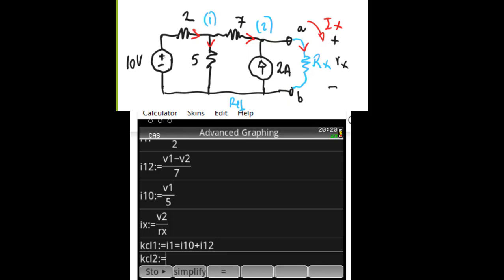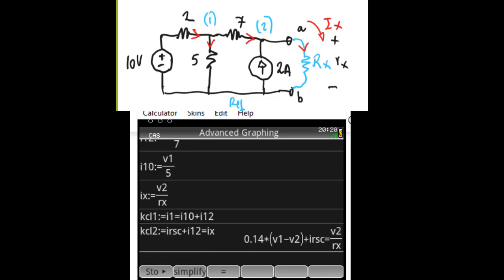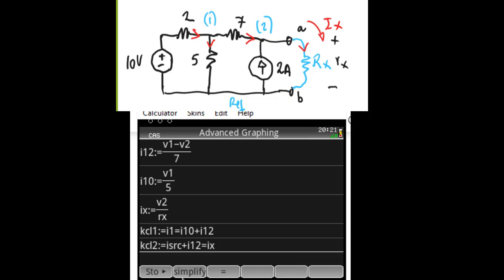KCL2 is coming in, we have the current source and we have the current I1,2. And coming out Ix. There. That is the second equation. There. Much better. Thank you for that.